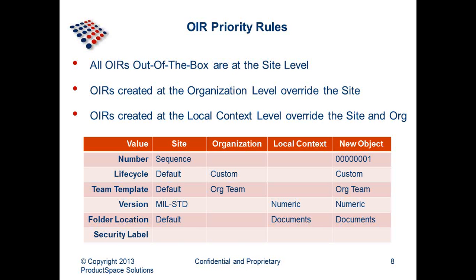Going back to the priority: all OIRs out of the box are at the site level. Anything created at the organization level overrides those site ones, and anything created at a local context overrides both site and org. For example, looking at lifecycle: the site calls to the default lifecycle, but if the organization has an OIR that says to use a custom lifecycle, the new object will use the custom lifecycle. This shows how anything at the local context takes precedence working backwards.